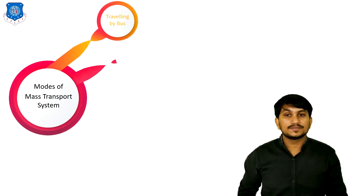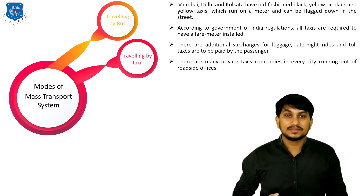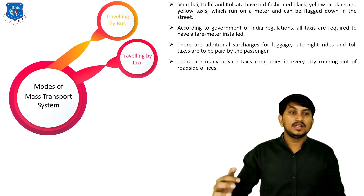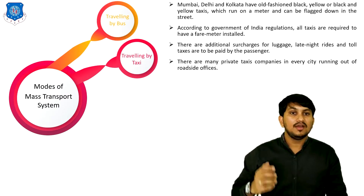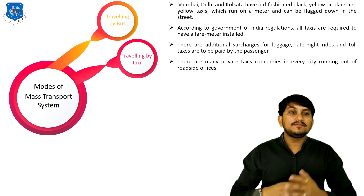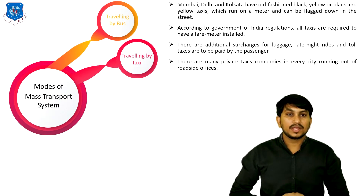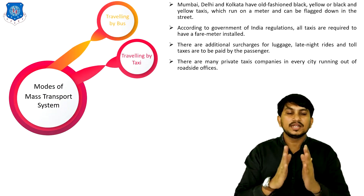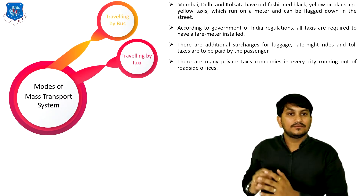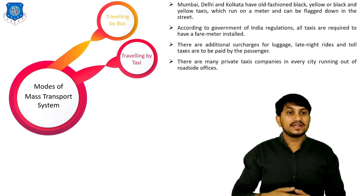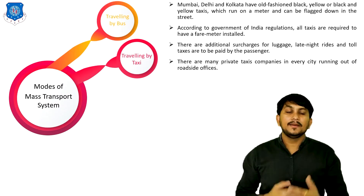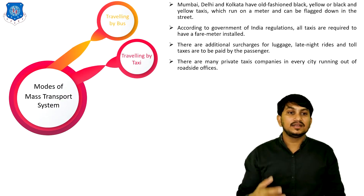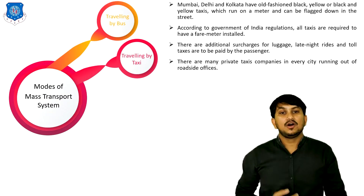The second mode of transportation is travelling by taxi. Mumbai, Delhi, and Kolkata have old-fashioned black and yellow taxis which run on a meter and can be flagged down in the street. According to Government of India regulations, all taxis are required to have a fare meter installed. There are additional surcharges for luggage, late night rides, and toll taxes to be paid by passengers. These are mainly private taxi companies in every city running out of roadside offices.